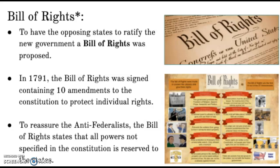The Anti-Federalists and the Federalists came up with a solution. Technically it was the Anti-Federalists who were creating it and the Federalists agreed to it. It is the Bill of Rights, which was proposed and in 1791 signed, containing 10 amendments to the Constitution that protect your individual rights. The Bill of Rights also states that all powers not specified in the Constitution are reserved for the states — that is federalism, the split between state, local, and federal government.